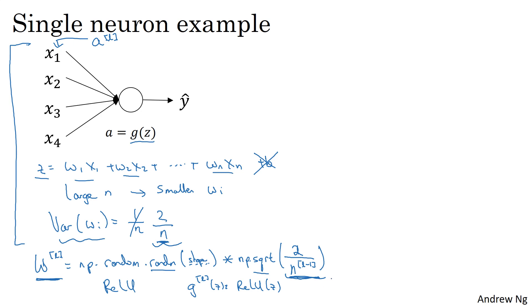So if the input features or the input activations are roughly mean 0 and standard variance, and variance 1, then this will cause z to also take on a similar scale. And this doesn't solve, but it definitely helps reduce the vanishing and exploding gradients problem, because it's trying to set each of the weight matrices w so that it's not too much bigger than 1 and not too much less than 1, so it doesn't explode or vanish too quickly.